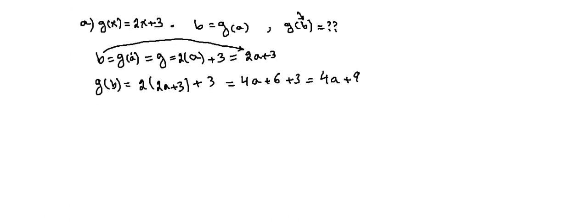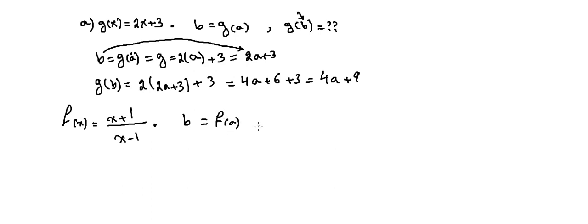Part B of this problem: we are given another function F of X, where F of X equals (X plus 1) over (X minus 1). If B equals F of A, we have to find F of B in terms of A, the same approach as before — first find B, then find F of B.